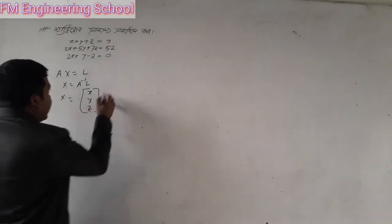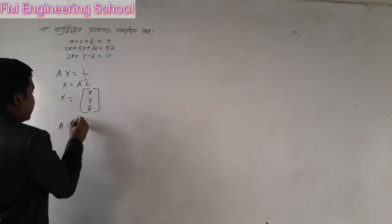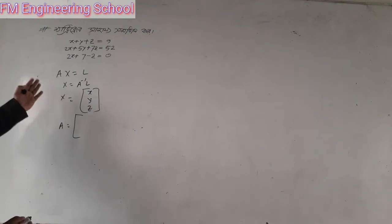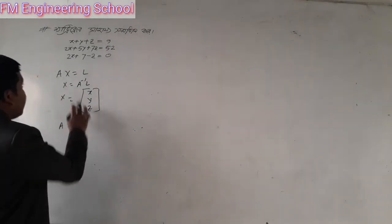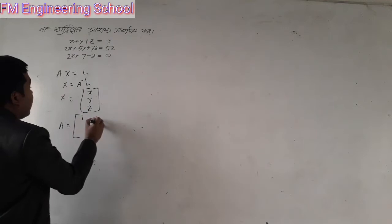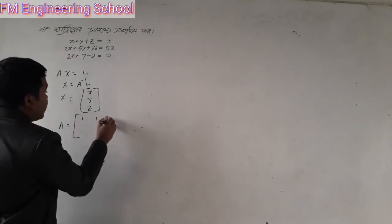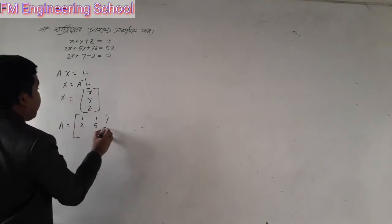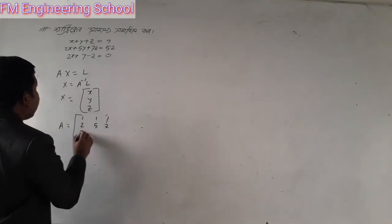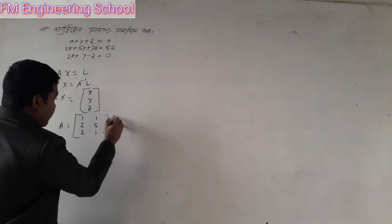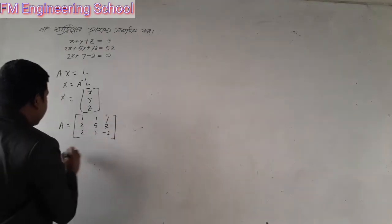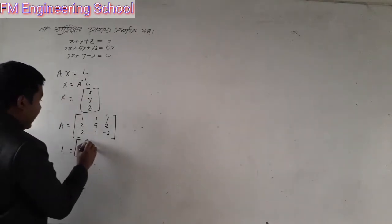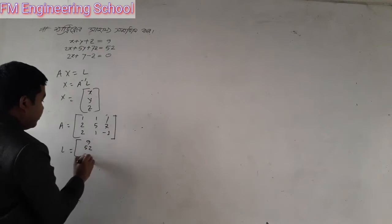Next, we've called x, y, z and y. This is the matrix. If x is 1, y is 1, z is 1. 2, 5, 7, 2, 1, minus 1. The x is 1. This is 9, 5, 2, 0.